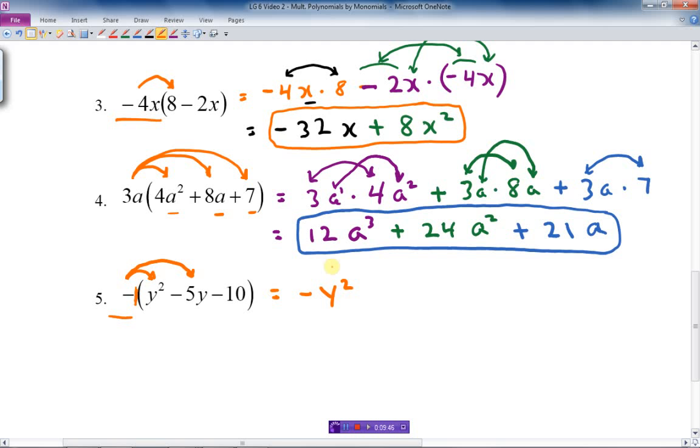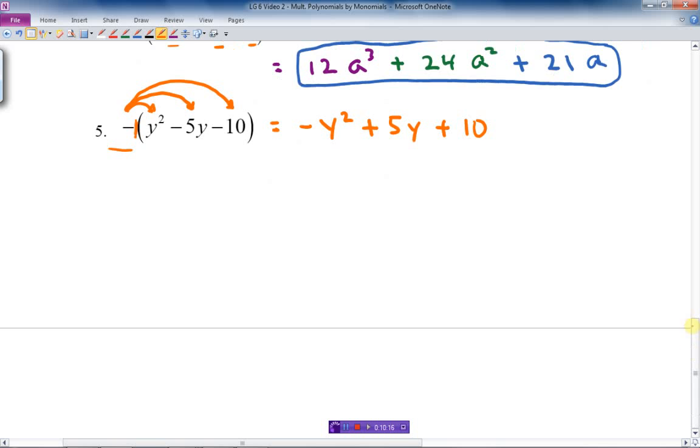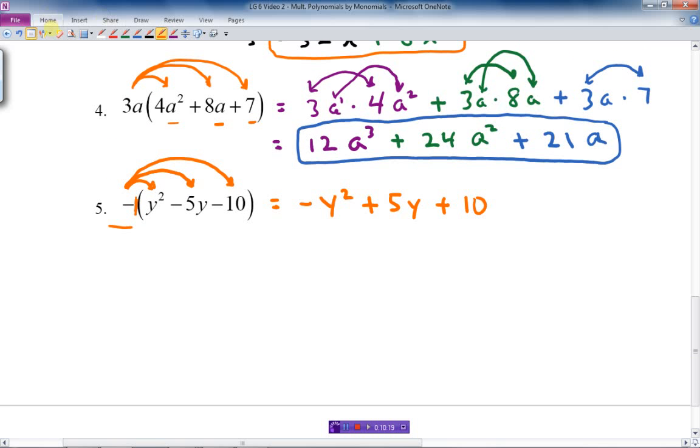All the negative in front did was just change the sign of everything in the brackets. The positive y squared became negative, and the negative five y and negative ten became positive. It just changed the sign. I hope that makes sense. Thank you.